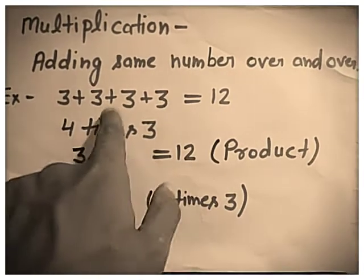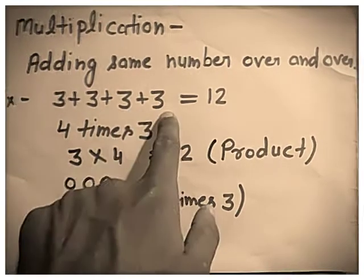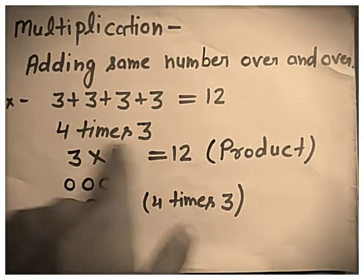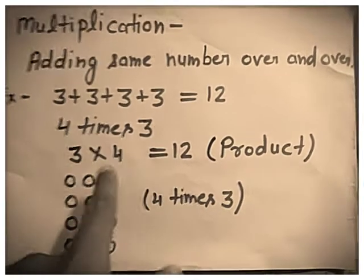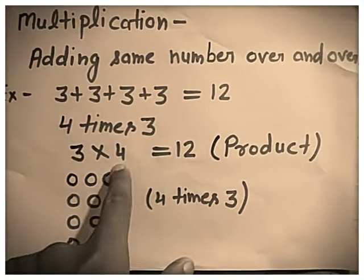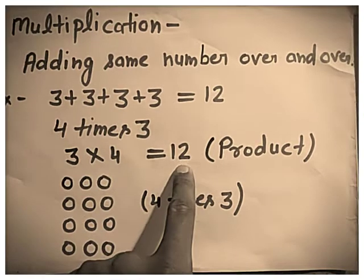Now, counting 1, 2, 3, 4 — that is 4 times 3. So, 3 four's are 12.